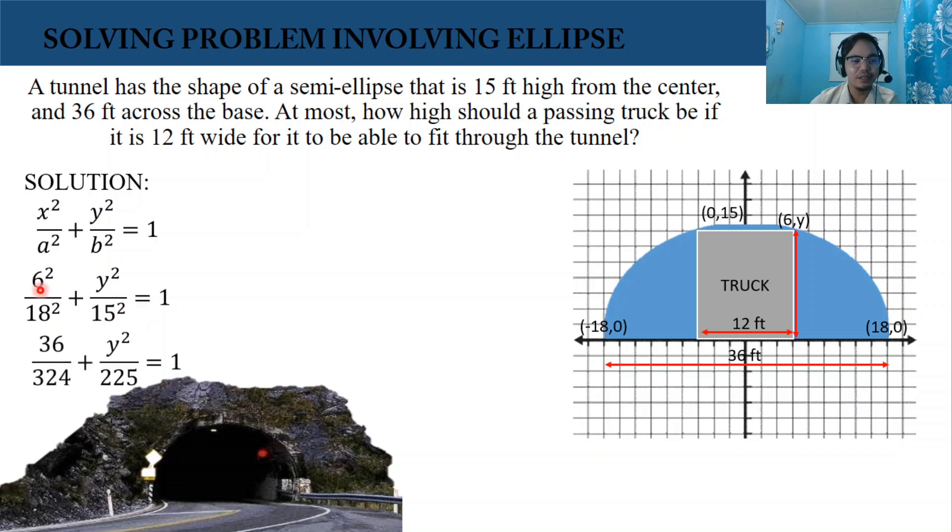Then simplify. 6 squared is 36. 18 squared is 324. And plus y squared over 15 squared is 225 equals 1.